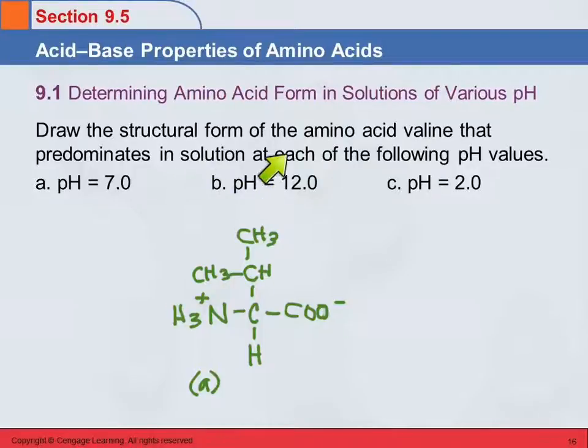Now pH 12, is that acidic or basic? That's basic. That means we have more hydroxide ion. So then we look at this zwitterion, and we say, well, if we've got more hydroxide ion, hydroxide is a base. Bases accept protons. Which one of these can donate a proton? This amine group, right? This protonated amine.